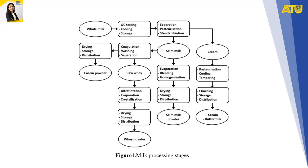Filling and packaging: once in the processing line, milk can be transferred into many different types of packages, including cartons, glass pouches, bottles, and others. Packaging systems organize product containers into easily stored and transported cartons, boxes, and pallets.